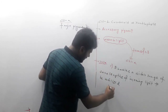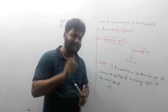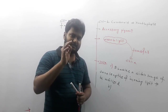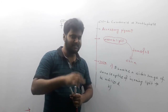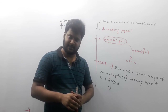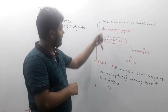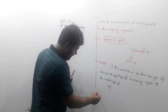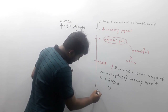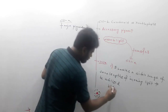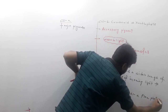Another role of accessory pigments is to protect chlorophyll A. Chlorophyll A can undergo photo oxidation — a dangerous state — when very intense light arrives. The accessory pigments surround chlorophyll A and protect it from photo oxidation.